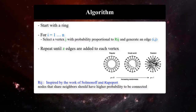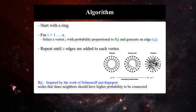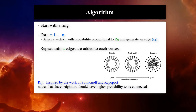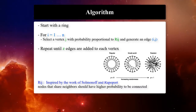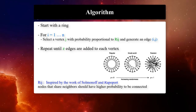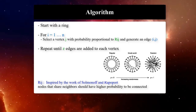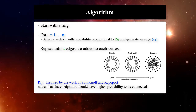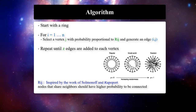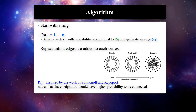To construct such a graph, he suggests starting with a regular graph such as a ring, and for i equals 1 to n, where n is the number of nodes, select a vertex j with probability proportional to r_ij, and generate an edge between i and j. Repeat until z edges are added to each vertex. Then we have a small-world graph.